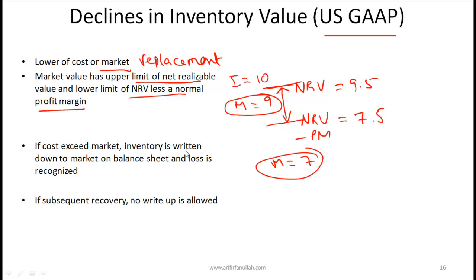If cost exceeds market, inventory is written down to market on the balance sheet and a loss is recognized. If there is a subsequent recovery in value, no write-up is allowed under US GAAP — this is the key difference from IFRS. US GAAP is more strict and does not allow any write-ups, whereas IFRS allows write-ups as long as the original cost is not exceeded.